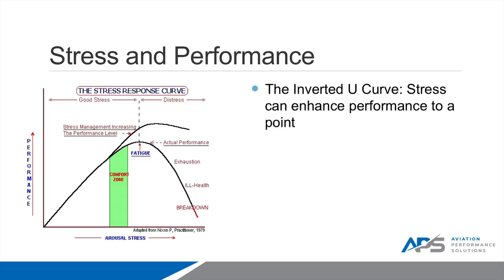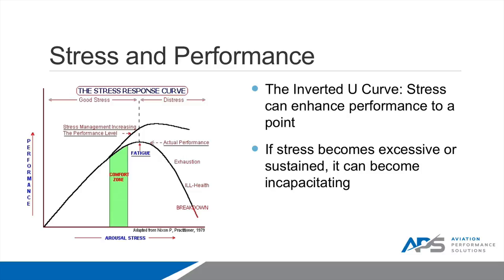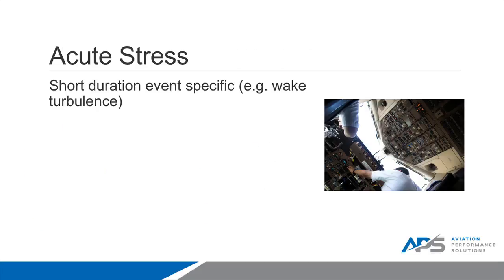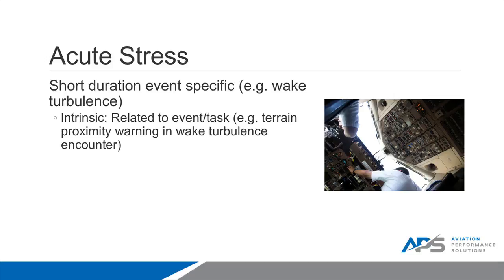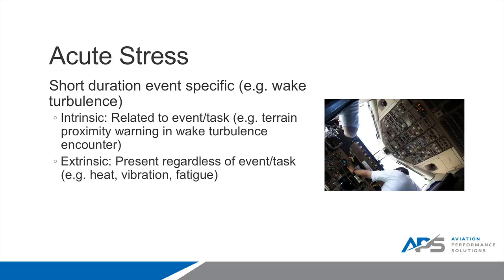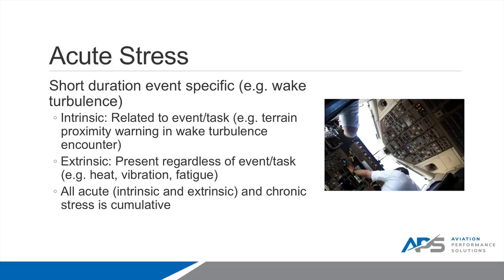Stress can enhance performance up to a certain point as shown on this inverted U curve. As we encounter a crisis, we might go toward the peak of the curve or slightly beyond, but not to the point where exhaustion or incapacitation occurs. Acute stress — again, short duration and event-specific, like a wake turbulence encounter — can be intrinsic, related to the event or task itself, or extrinsic, present regardless of the event, such as heat, vibration, or fatigue. All acute intrinsic, extrinsic, and chronic stress is cumulative.